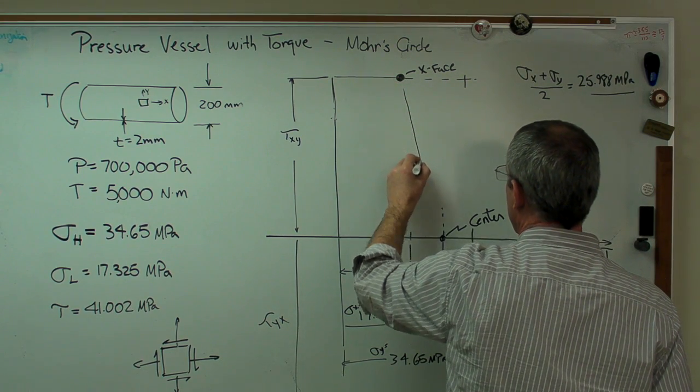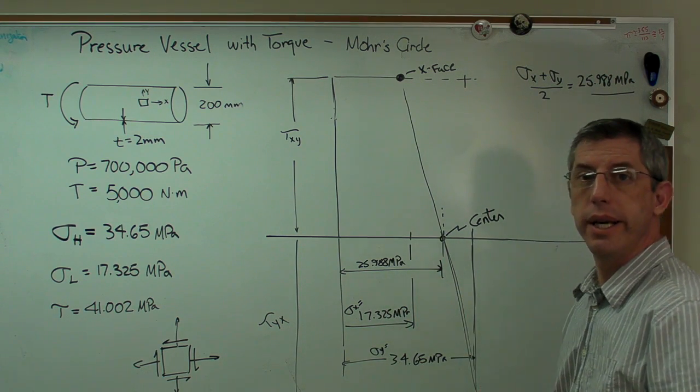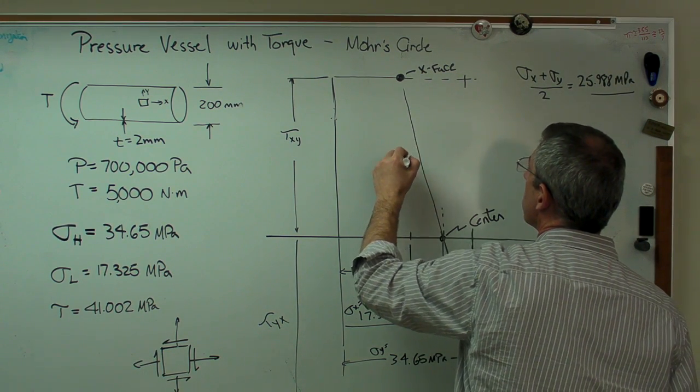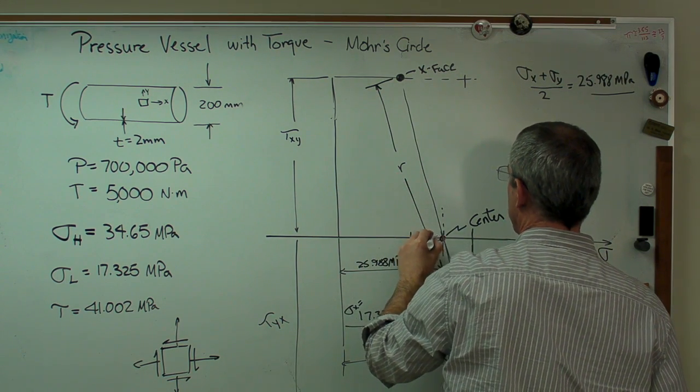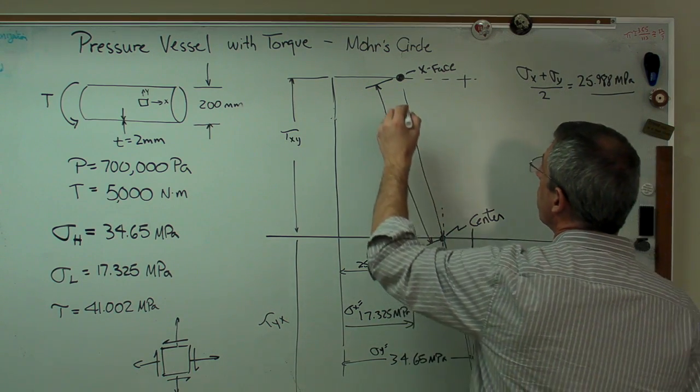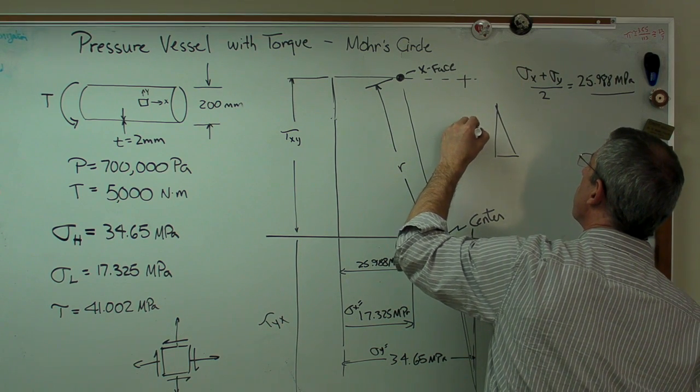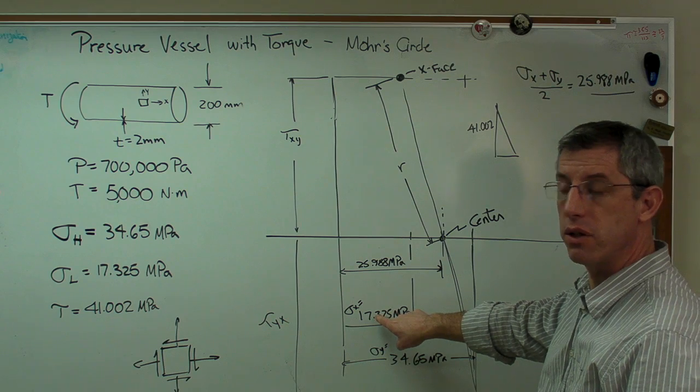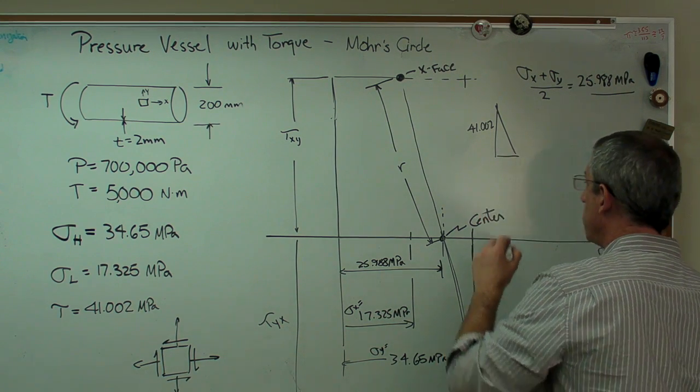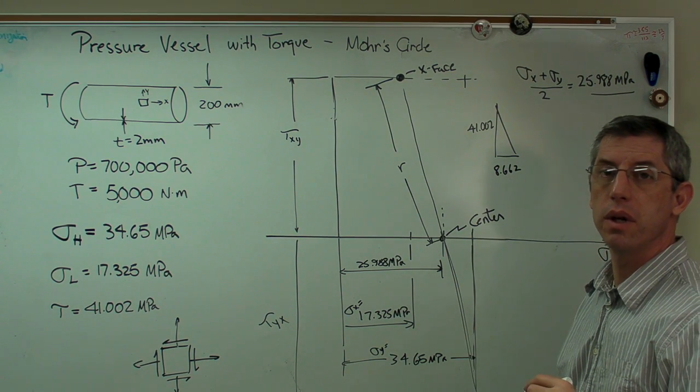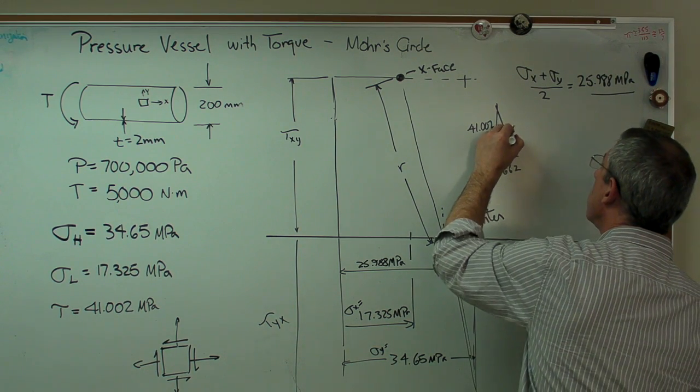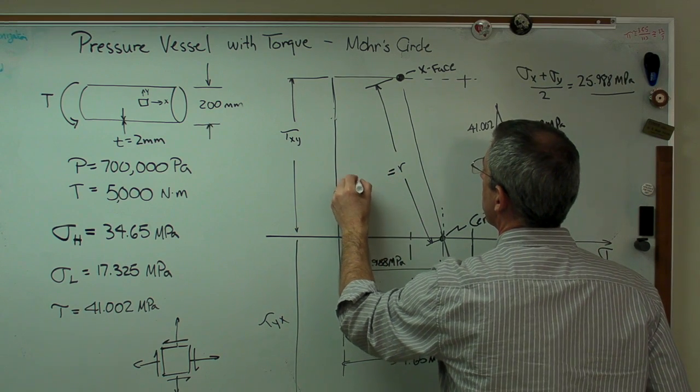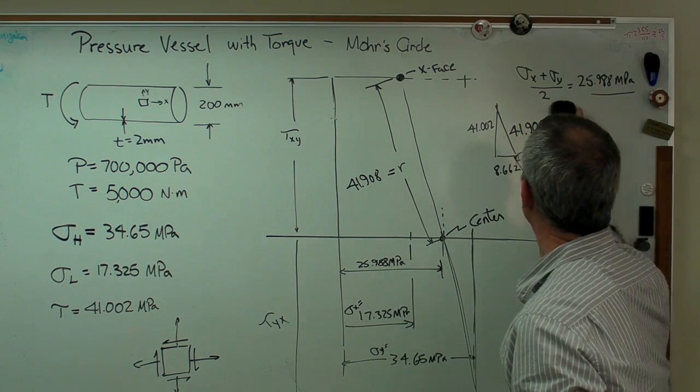Now I know where the center is and I know what the radius is, pretty much. I know graphically what the radius is. It would be helpful if I knew numerically what the radius was. Well, the radius, I want to draw it this way. That's 41.002. This distance right here is my mean stress minus my stress in the x-direction. And that turns out to be 8.662. And if I use the Pythagorean theorem, I'll find out that my radius is 41.908 megapascals. So I put that right there.